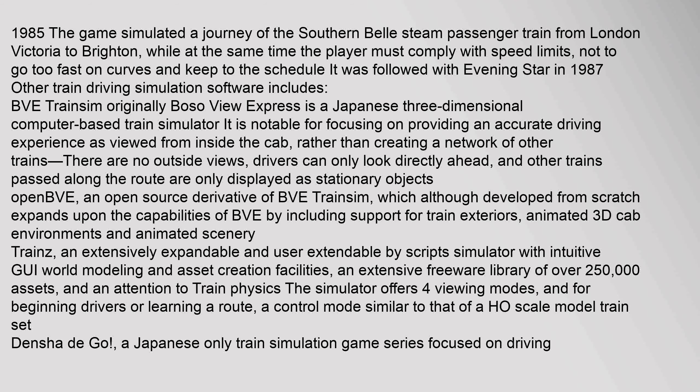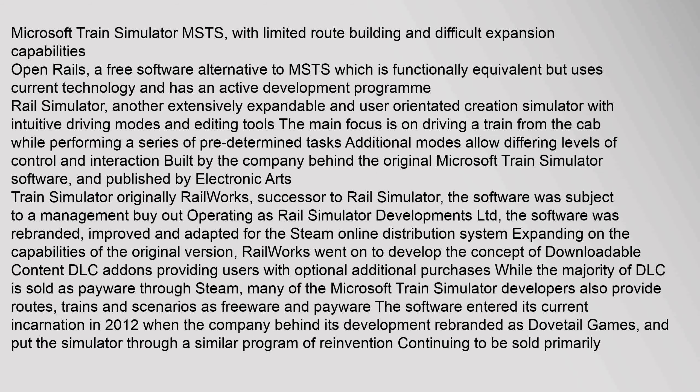Densha de Go is a Japanese-only train simulation game series focused on driving. Microsoft Train Simulator (MSTS) features limited route building and difficult expansion capabilities. Open Rails is a free software alternative to MSTS, functionally equivalent but using current technology with an active development program. Rail Simulator is another extensively expandable and user-oriented creation simulator with intuitive driving modes and editing tools, built by the company behind the original Microsoft Train Simulator software and published by Electronic Arts.